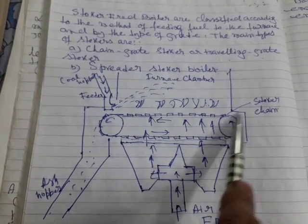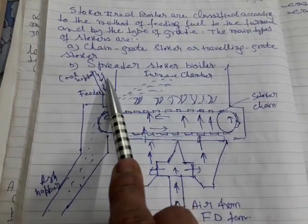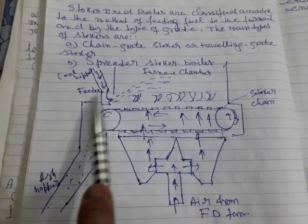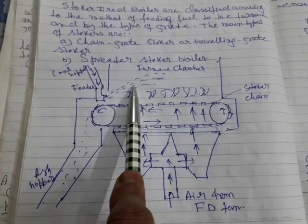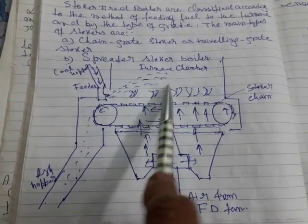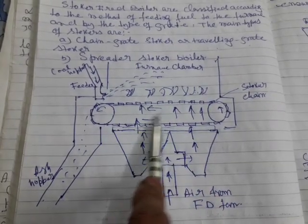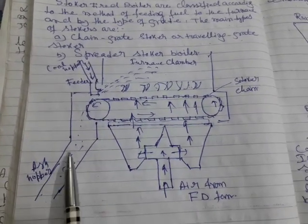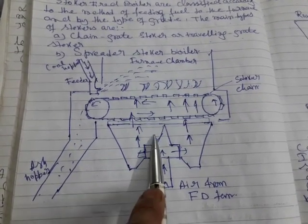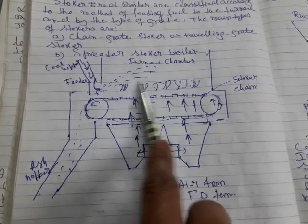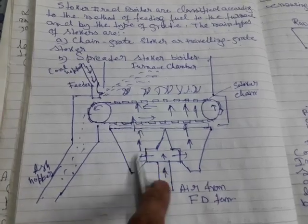In the chain grate stoker diagram: there is the stoker chain, a coal hopper, and a feeder. With the help of the feeder, coal is sprayed and burning takes place. There is an ash hopper, and air from the FD fan enters into the chain grate stoker and ultimately enters the furnace chamber. This is a very simple and easy schematic diagram.